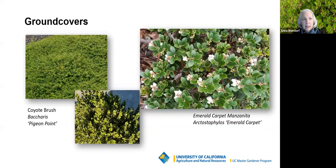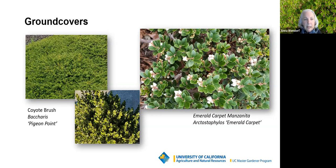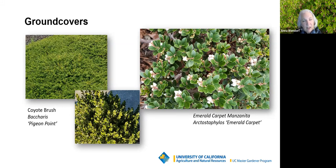Some more fast-growing ground covers: the pigeon point coyote bush is great if you cut it back — if you don't, it gets a little woody, but it's so lush and green. The emerald carpet manzanita and other low-growing manzanitas — including uva ursi varieties, Greenbrae, and Monterey carpet — are absolutely gorgeous. Most of these need a little shade in the inland areas and require careful summer watering: just sprinkle their leaves; don't over-water them or they will die out.